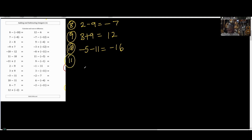Number 11: 10 minus 11. One is positive, one is negative. The negative has a higher population, so our answer should be negative. If we take 10 negatives to cancel 10 positives, we have only 1 negative remaining. So the answer is negative 1.